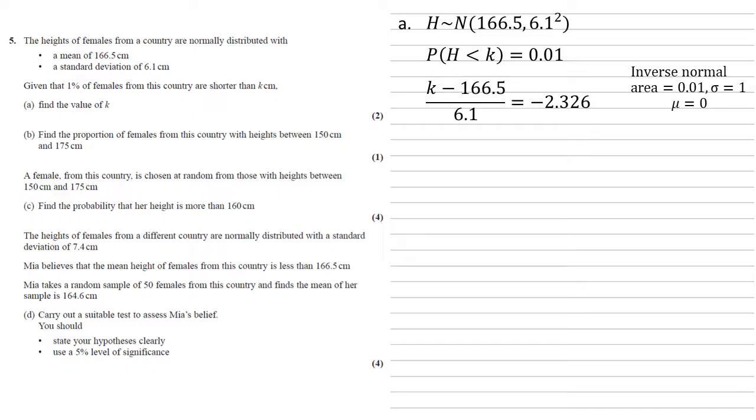This is then going to be equal to the K that we're after, minus the mean of 166.5 divided by the standard deviation of 6.1. So rearranging this, we get K minus 166.5 is equal to minus 2.326 times 6.1, giving us an answer of 152.3.